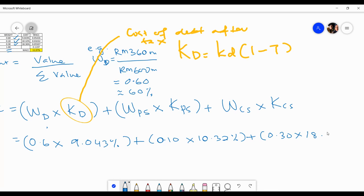18.36 percent. So you will get this amount: 0.05426 plus 0.01032 plus 0.05507.